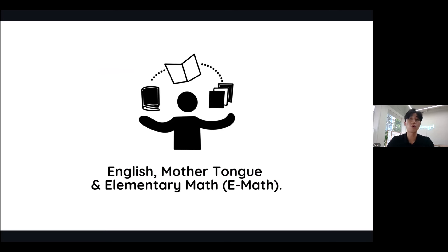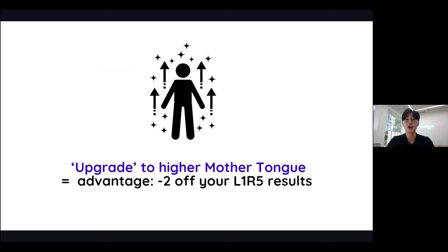There's an option to upgrade to higher mother tongue, which gives you an advantage to minus two marks off your L1R5 when tabulating your O-level results. My advice is to take higher mother tongue if you're able to, because that minus two off your L1R5 could be huge when it comes to making the cutoff for your choice of JC.